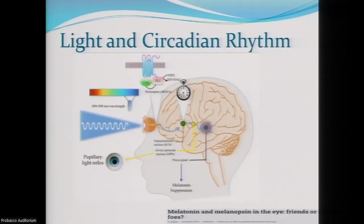Blue light hits those retinal cells, goes through the suprachiasmatic nucleus, and into the pineal gland to suppress melatonin release.